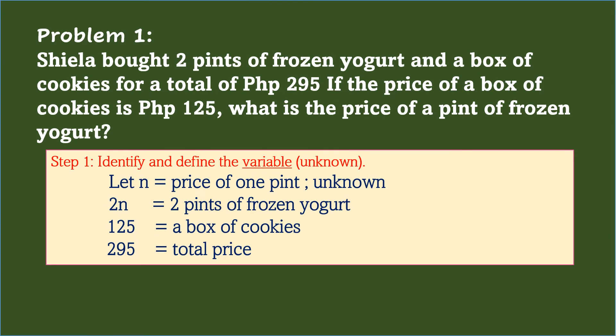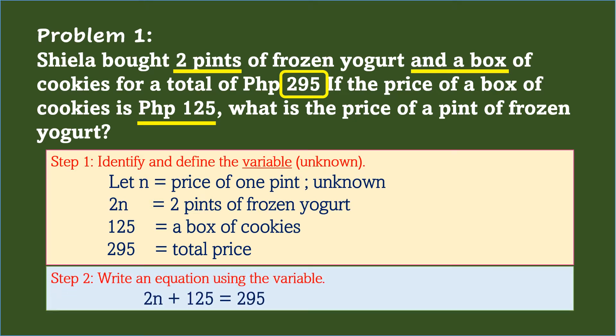After identifying and defining the variable, the second step is to write an equation using the variable. Going back with the problem, two pints of frozen yogurt and a box of cookies that cost 125 pesos were the items bought by Sheila, and the total price is 295 pesos. Writing an equation for this will be 2n plus 125 equals 295.